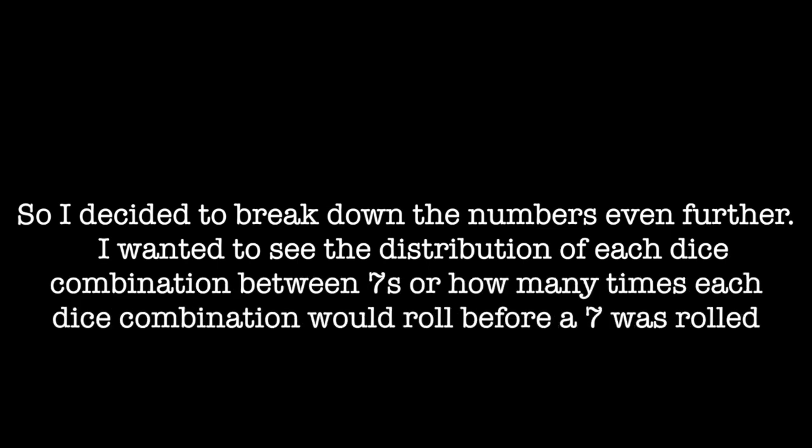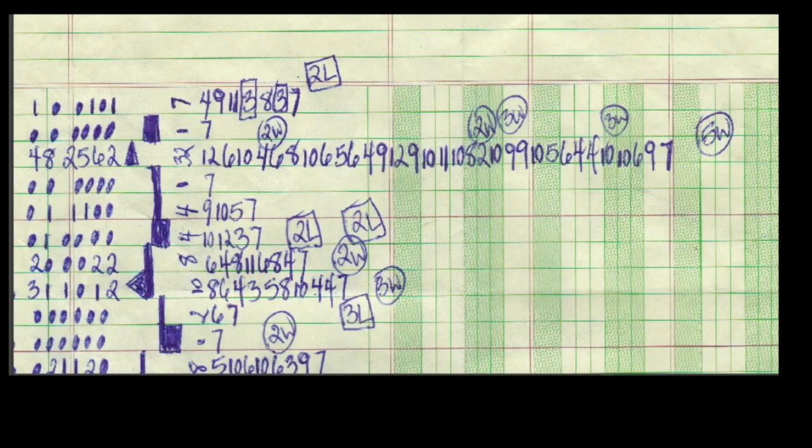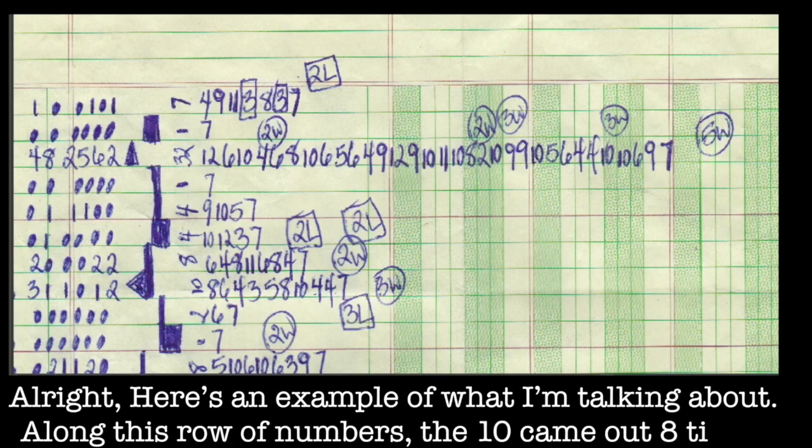I wanted to see the distribution of each dice combination between sevens or how many times each dice combination would roll before a seven was rolled. Alright, here's an example of what I'm talking about.